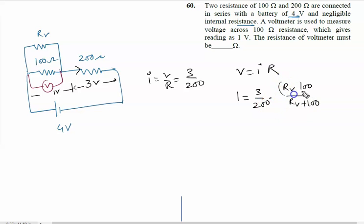So basically we will calculate - that is 200, so zeros will cancel, and it will be written as 2Rv plus 200 equals 3Rv. So Rv, that is the resistance of the voltmeter, it will be 200 ohm. The right answer of this problem is 200 ohm.